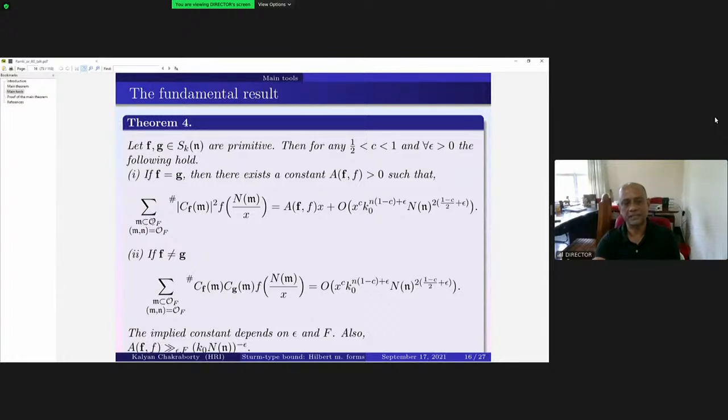So if f equals g, then sum over cf(m)^2, the hash again means square-free ideals, cf(m)^2 times f (this is a smooth cutoff function) of nm over x, this constant comes out here, plus an error term. And if f is not equal to g, then we have cf(m)cg(m), and f of nm over x is bounded by this. And here this a_ff, the constant that comes up when f equals g, can be estimated and is bigger than k_0 N(n)^(-epsilon).